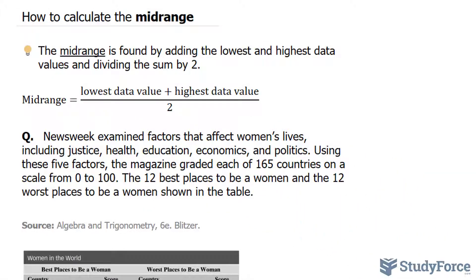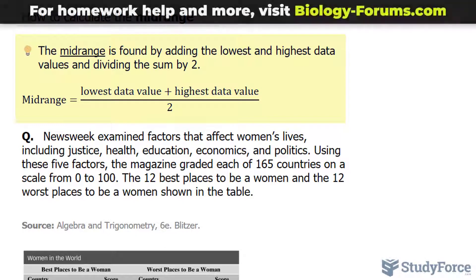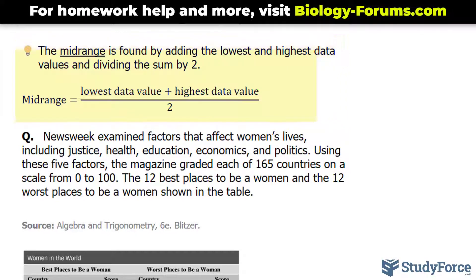In this quick lesson, I'll show you how to calculate the midrange. The midrange is found by adding the lowest and highest data values and dividing the sum by 2. This can be summarized with the formula shown right here.